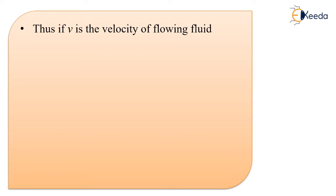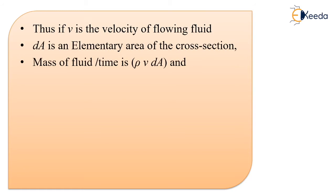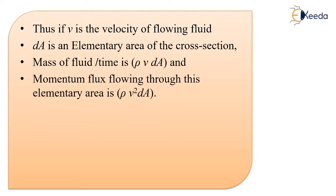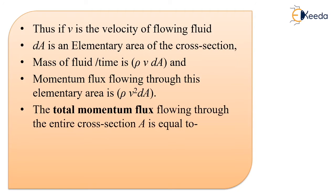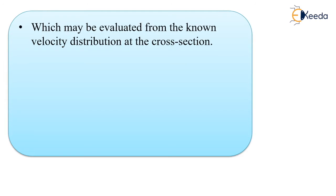Thus, if V is the velocity of the flowing fluid at any point through an elementary area dA of the cross-section, then the mass of the fluid flowing per unit time is ρ·V·dA. The corresponding momentum flux flowing through this elementary area is ρ·V²·dA. The total momentum flux flowing through the entire cross-section A is equal to the integration of ρ·V²·dA, which equals (W/g)·∫V²·dA, and may be evaluated from the known velocity distribution at the cross-section.